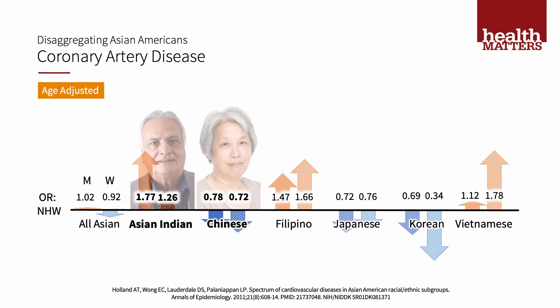Looking at electronic health records, we've seen differences in coronary artery disease in Asian subgroups. With the referent group being non-Hispanic whites, when we group all Asians together, it doesn't look like there's any difference in coronary disease for men and women. However, when we disaggregate the Asian subgroups, Asian Indians have higher risk and Chinese have lower risk. For other Asian subgroups, we don't have enough sample size to see statistically significant differences, and further studies are needed with increased sample sizes.